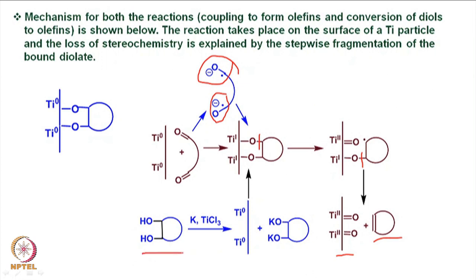If we take a diol and treat it with potassium and titanium trichloride under McMurry coupling conditions, a potassium diolate forms and has similar interactions on the titanium surface. The titanium(0) surface not only has Ti(0) particles but also low-valent titanium species like Ti(+1) and Ti(+2), and the interaction of the potassium diolate with the titanium surface leads to similar intermediates that eventually give the olefin and titanium dioxide or similar titanium species. This is the mechanism believed to be operating in McMurry coupling.